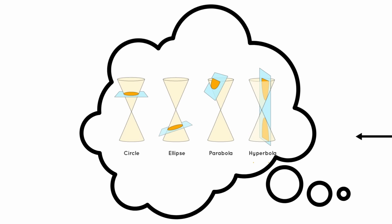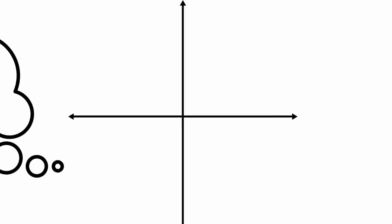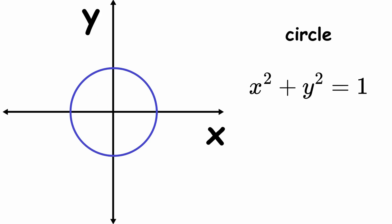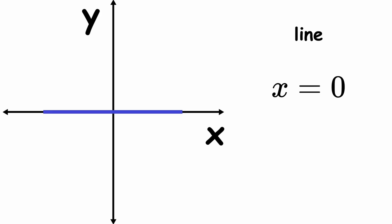Every conic section can be described in Cartesian coordinates by a certain equation in terms of x and y. Some simple examples are a parabola described by y equals x squared, a circle described by x squared plus y squared equals 1, and a line described by x equals 0.